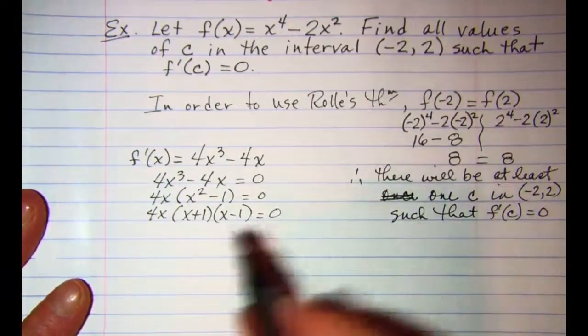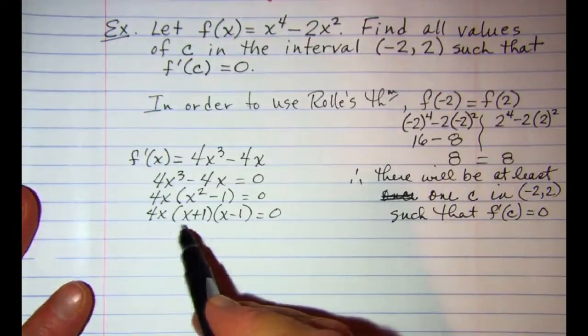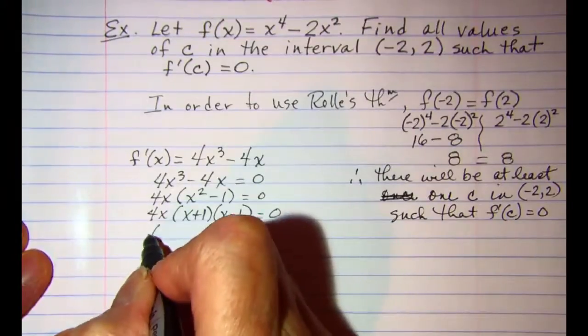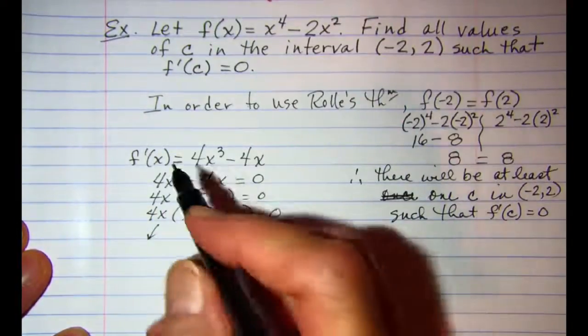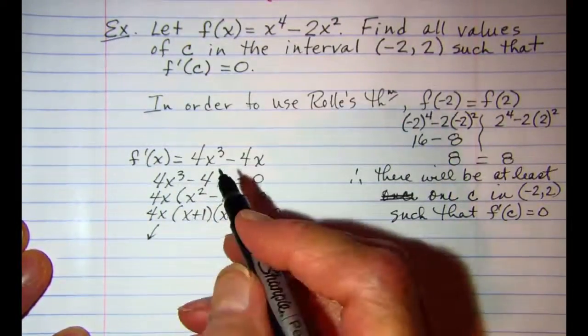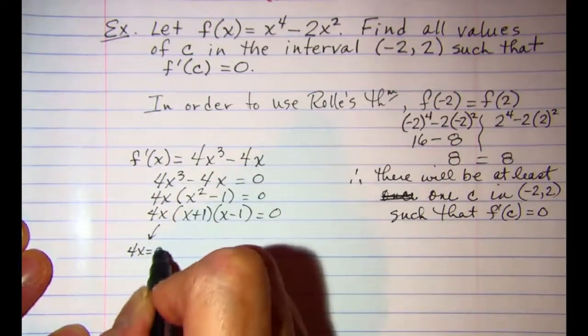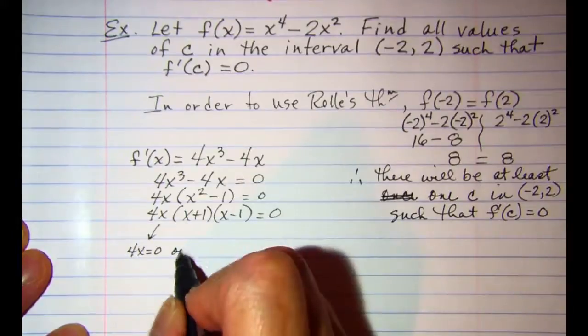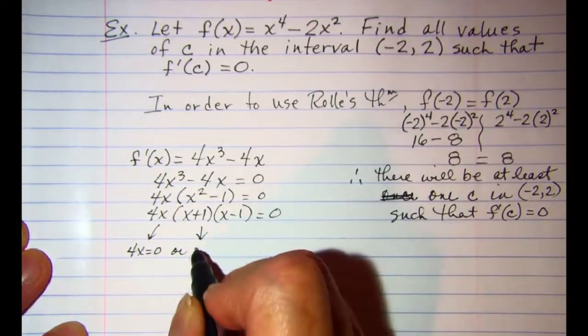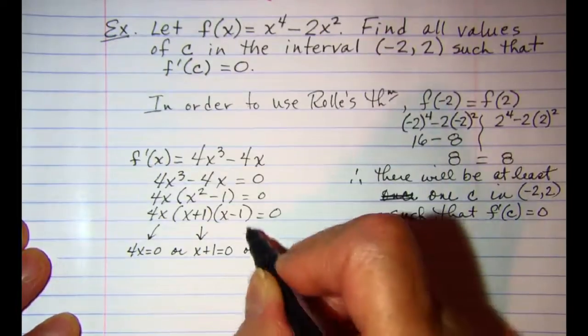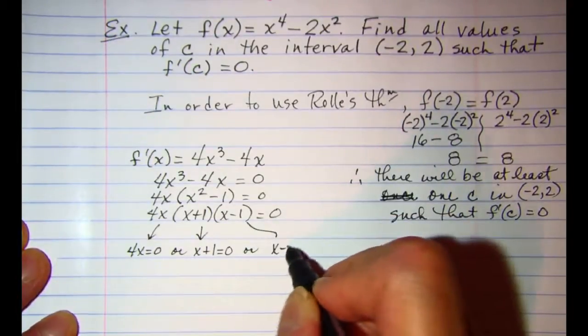And so we know then that if factors multiply together to give me zero then one or another or all is equal to zero. So 4x equals zero or x plus 1 equals zero or x minus 1 equals zero.